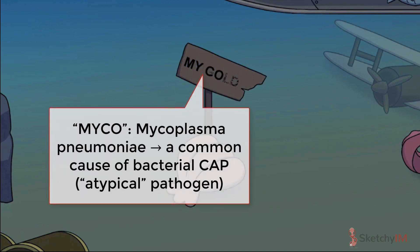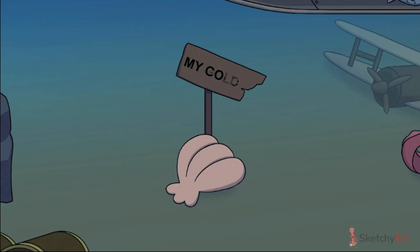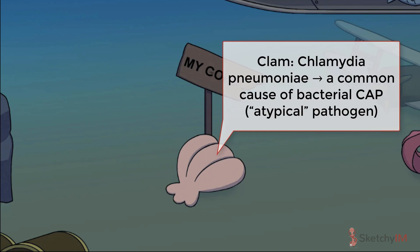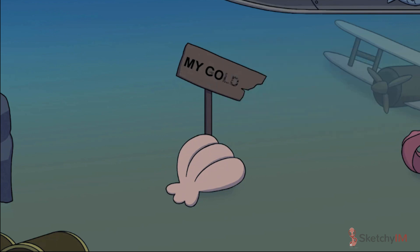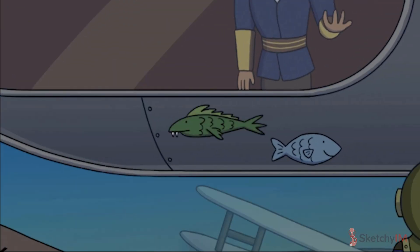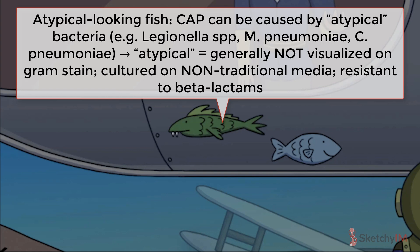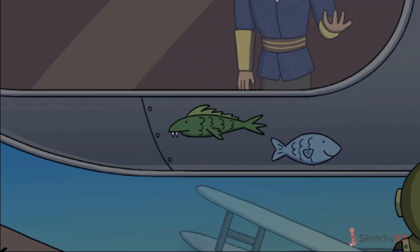Next up, the atypical bacteria. The most common of the atypicals is Mycoplasma pneumoniae, a teeny tiny bacterium with no cell wall, which means it's resistant to beta-lactams and can't be stained. Mycoplasma is a common bacterial cause of both upper and lower respiratory tract infections. Next is Chlamydia pneumoniae, an obligate intracellular bacterium also associated with upper and lower respiratory tract infections, symbolized by a chlamydia clam. Because of its proteoglycan-poor cell wall and the fact that it likes to hide inside the cell, Chlamydia pneumoniae is relatively resistant to beta-lactams and not easily stained or cultured. These bugs are dubbed atypical not because they're rare, but because they have resistance to beta-lactams, can't be cultured using traditional approaches, and aren't seen well on gram stain.